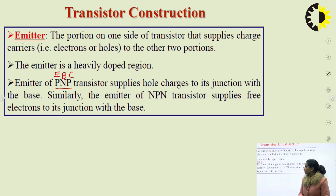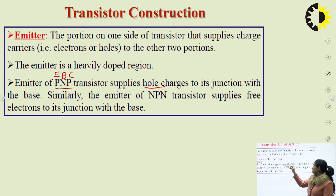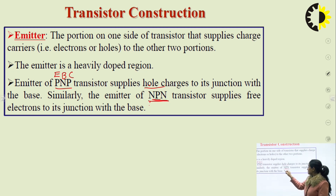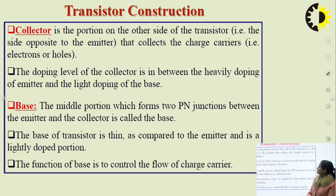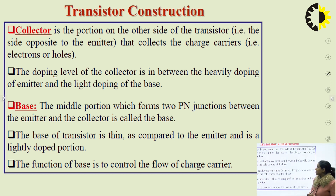For a PNP transistor, the emitter possesses the maximum number of holes and supplies holes to its junction with the base. The emitter of the NPN transistor supplies free electrons to its junction with the base. The collector is the portion on the other side of the transistor — opposite to the emitter — that collects the charge carriers. For NPN it collects electrons; for PNP it collects holes. The doping level of the collector is between the heavily doped emitter and lightly doped base.